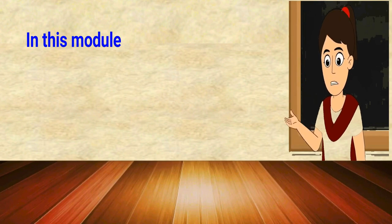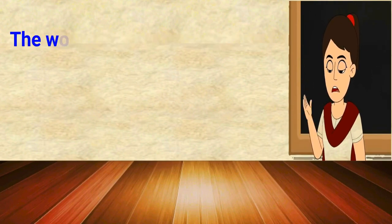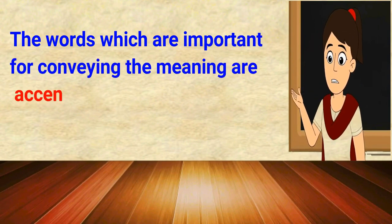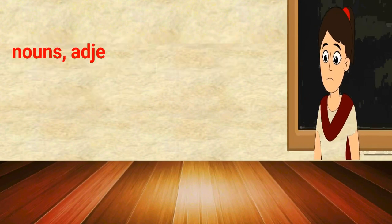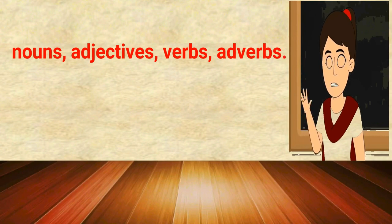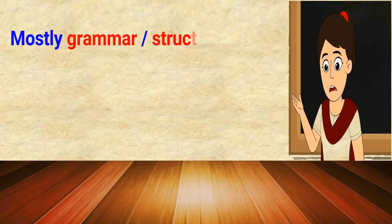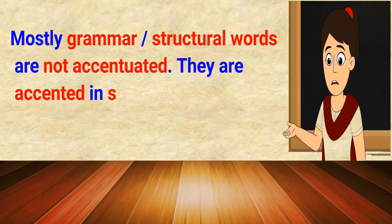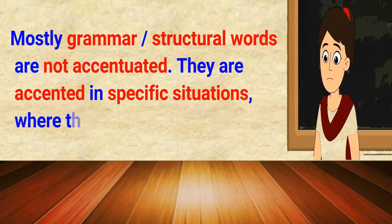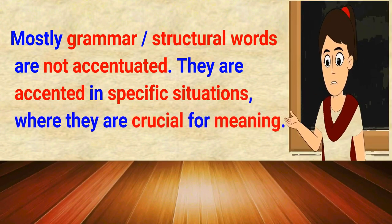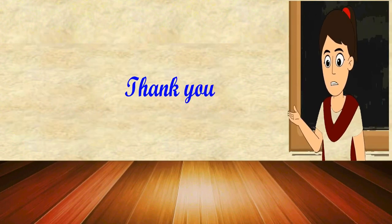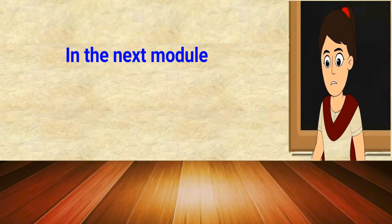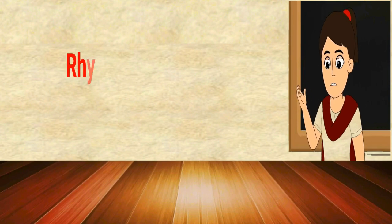In this module, we came to know that the words which are important for conveying the meaning are accentuated — nouns, adjectives, verbs, adverbs. Mostly grammar or structural words are not accentuated; they are accented only in specific situations where they are crucial for meaning. Thank you friends. We will meet in the next module and will come to know about rhythm and intonation.